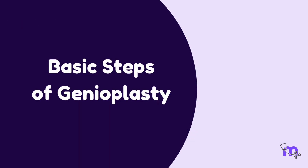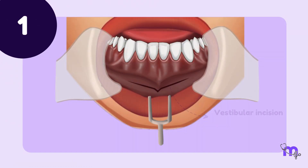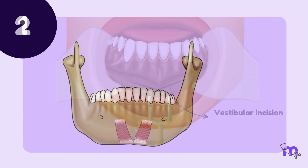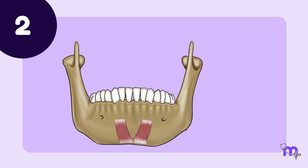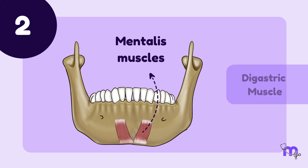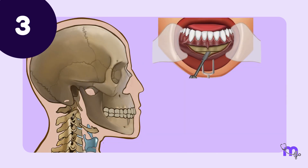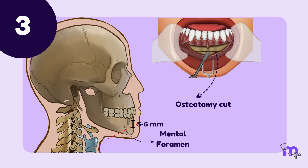There are certain basic steps to genioplasty. First, a vestibular incision is given. Next, we dissect the soft tissue and muscles like the mentalis and sometimes the digastric muscle. Next, the osteotomy cuts are given 5–6 mm below the apex of the canine and below the mental foramen on either side.